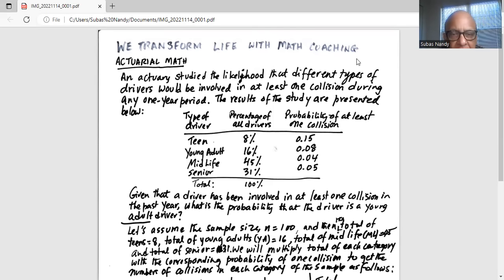So there are different types of drivers: teen, young adult, midlife, and senior. In the second column, we have percentages of all drivers. For example, teen consists of 8% of all drivers. And then the last column, probability of at least one collision in each category.